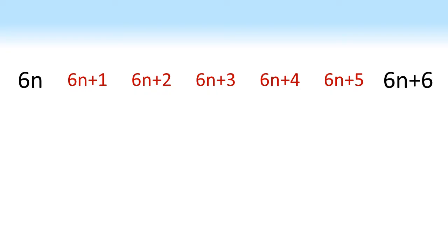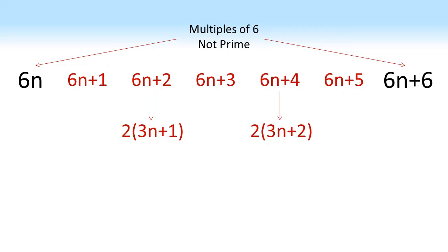Now looking at these numbers, 6n and 6n plus 6 are obviously multiples of 6, hence they cannot be prime because they're in the six times table. Looking at our numbers in the middle, 6n plus 2 can be factorised into 2 times 3n plus 1, which is 2 times a whole number. 6n plus 4, we can do the same thing. So this is 2 times 3n plus 2. As they're both 2 times a whole number, they must both be multiples of 2, hence they can never be prime.